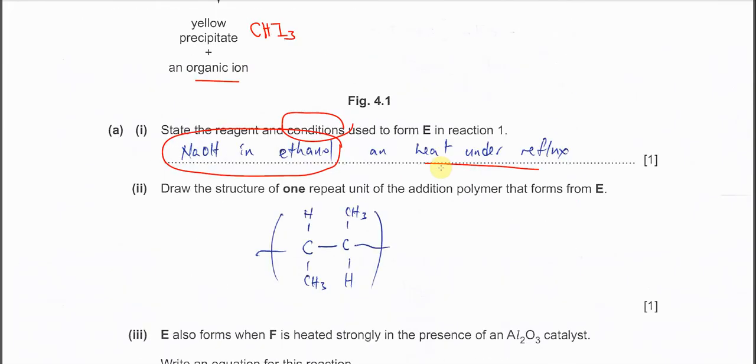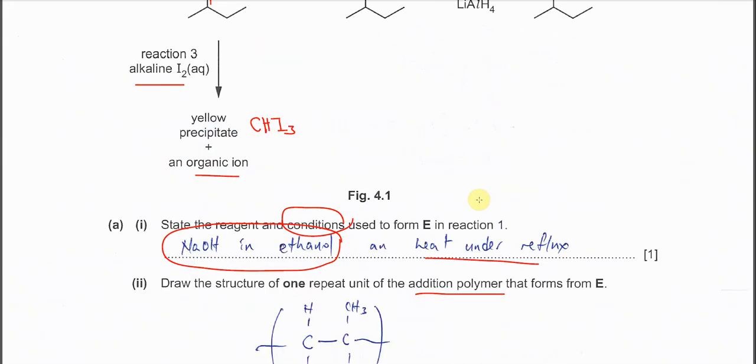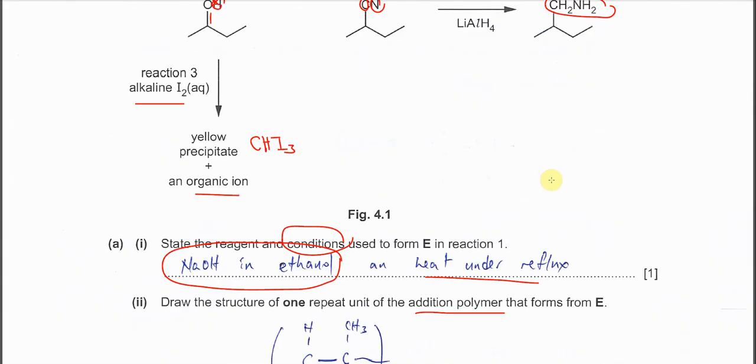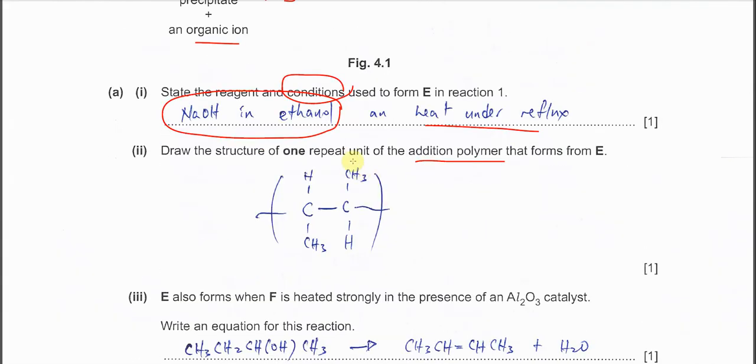Draw the structure of one repeat unit of the addition polymer that's formed from E. Very easy. First from this E you should know it looks like this CH-CH3 CH-CH3. So after that this double bond will open up and it's formed tails. So you'll form this polymer. One repeat unit means you just need to put this CH-CH3 and CH-CH3. Remember tails is important.